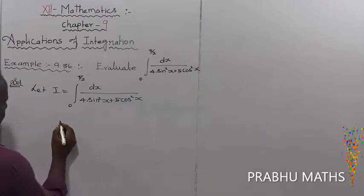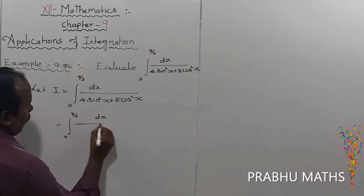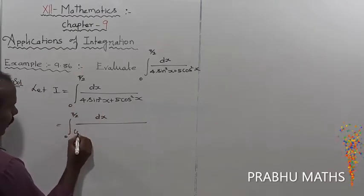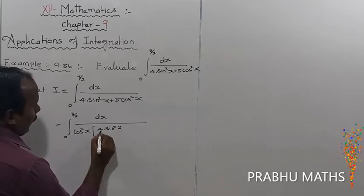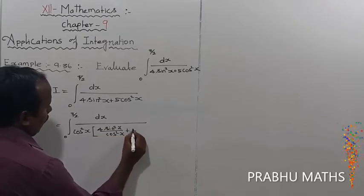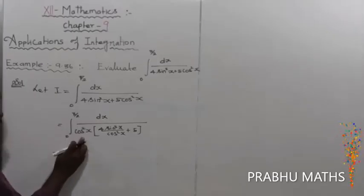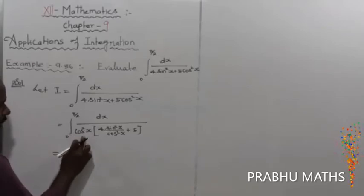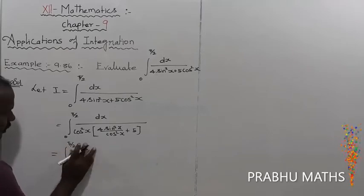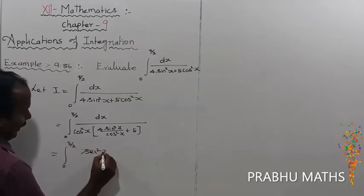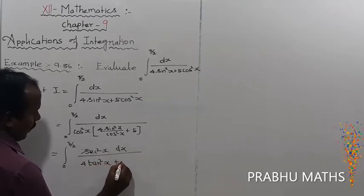To simplify, divide numerator and denominator by cos²x. The integral becomes the integral from 0 to pi/2 of secant²x dx divided by 4 times tan²x plus 5, since 1 over cos²x equals secant²x.